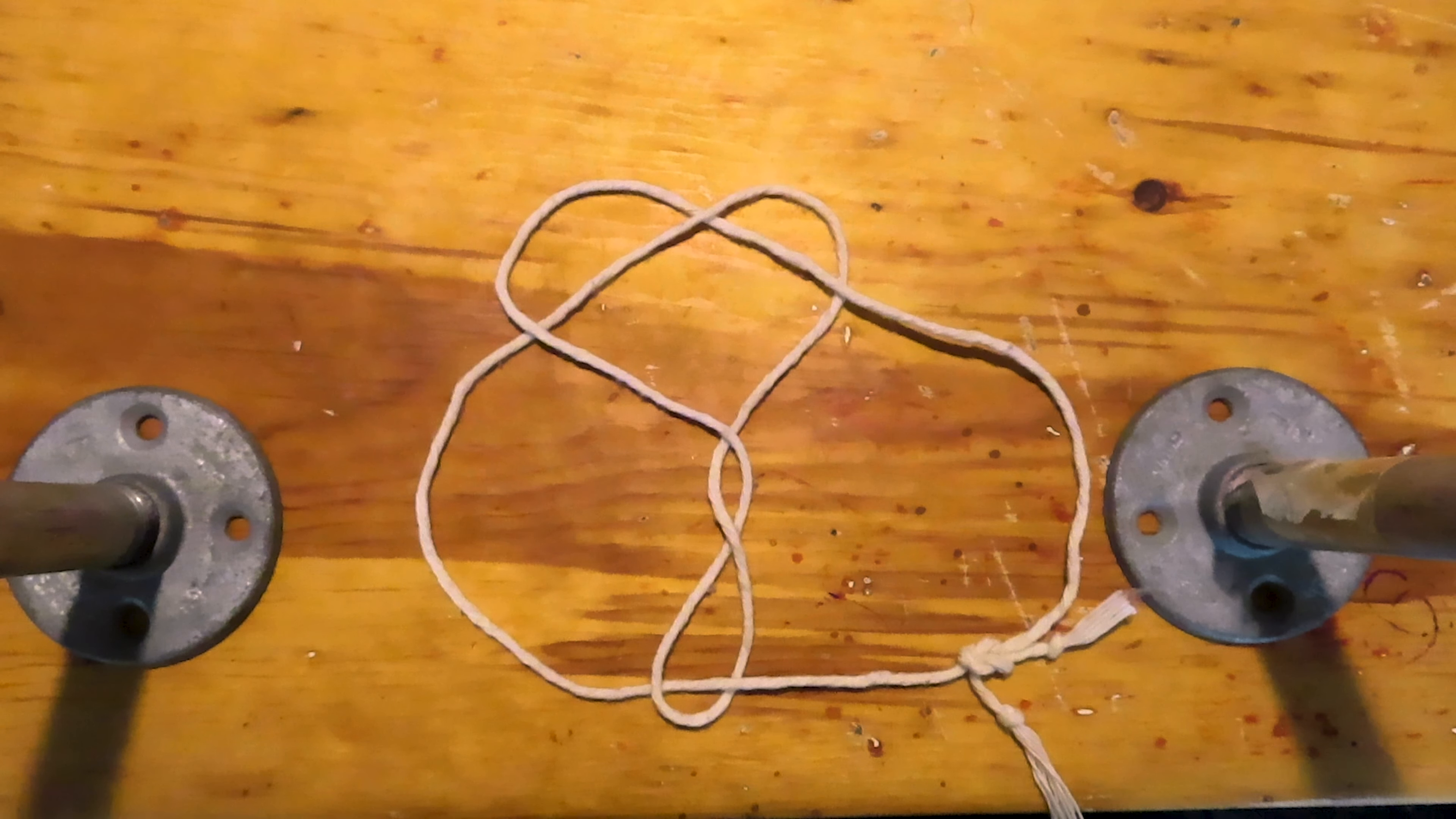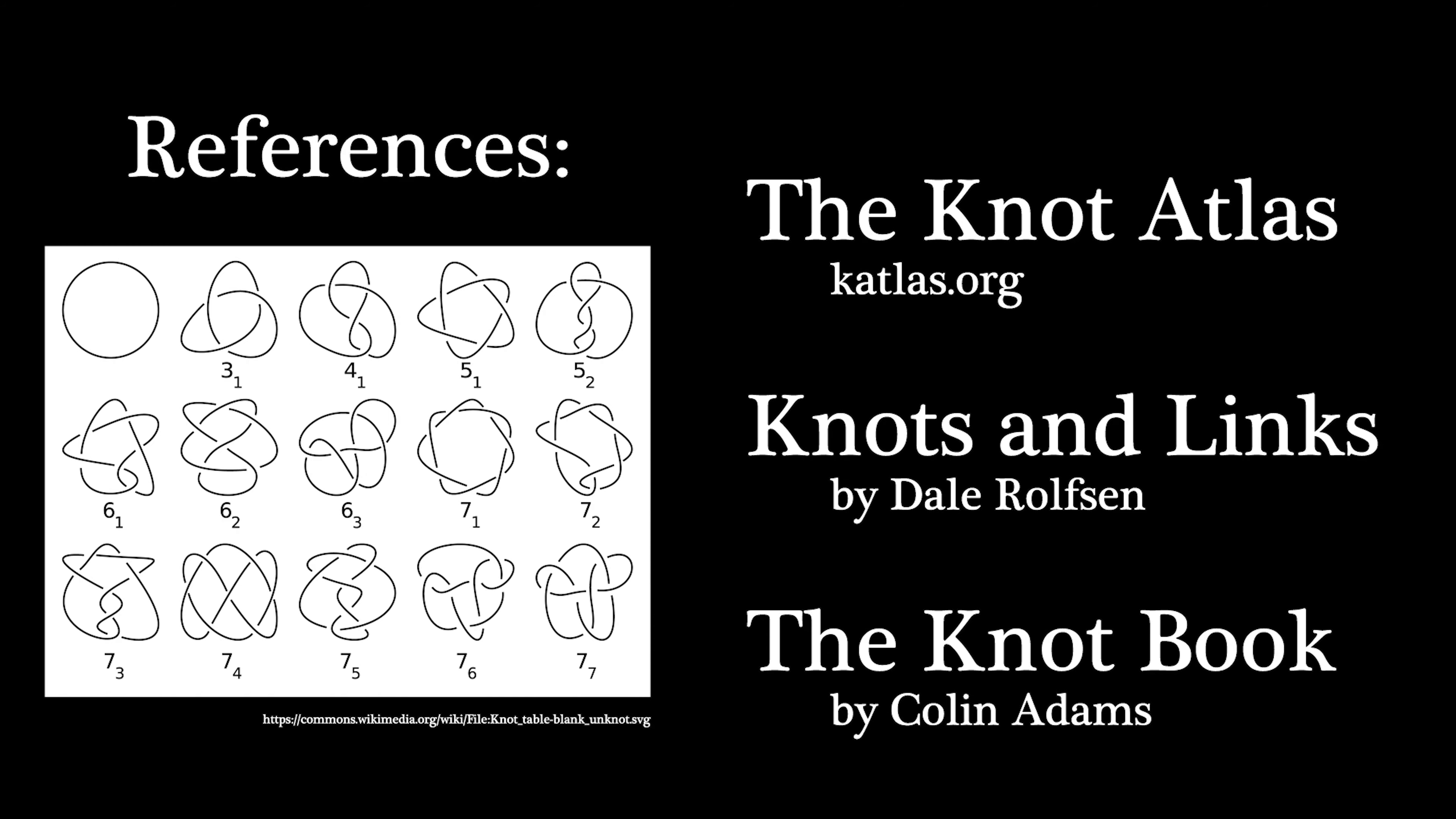We start with an overhand knot. Twist the loop that you've made, and twist it again. And now pass one of those loose ends through the loop that you've created.